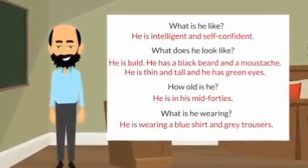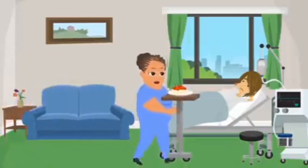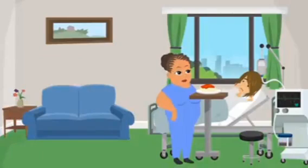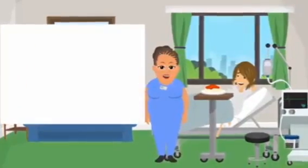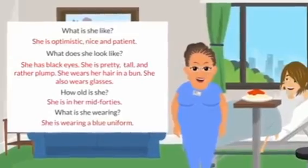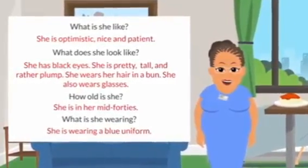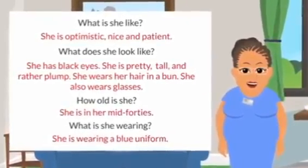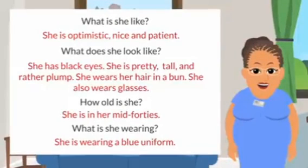An example dialogue from the tracking activity video: 'What is he like? He is intelligent and self-confident. What does he look like? He is bald, he has a black beard and a mustache, he is thin and tall, and he has green eyes. How old is he? He is in his mid-40s. What is she like? She is optimistic, nice, and patient. What does she look like? She has black eyes, she is pretty tall and rather plump, she wears her hair in a bun and also wears glasses. She is in her mid-40s and wearing a blue uniform.'